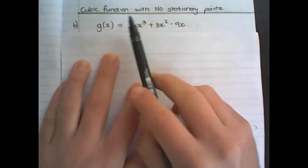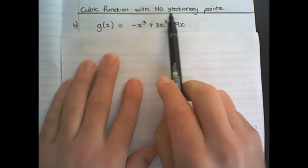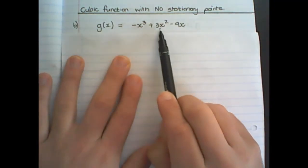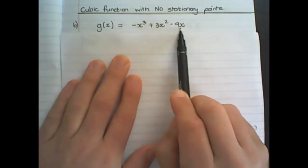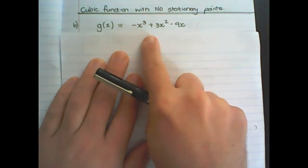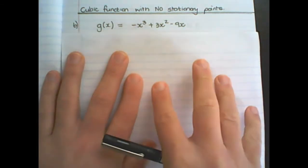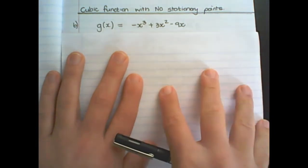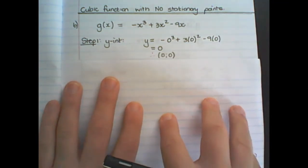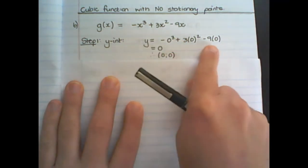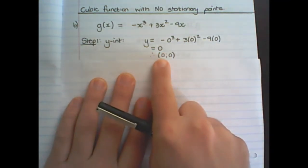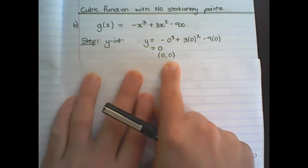In our second example, we have a cubic function with no stationary points. We are given g(x) equals negative x cubed plus 3x squared minus 9x. There is no way of predetermining whether or not it will have stationary points, so we simply need to follow the 5 steps. Step 1 is the y-intercept: we replace x with 0, and therefore y equals 0, so the y-intercept is at the origin.